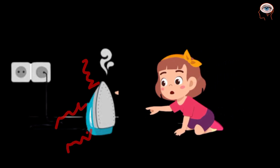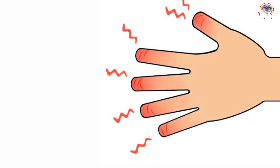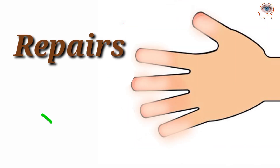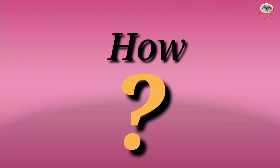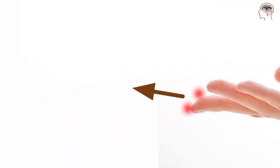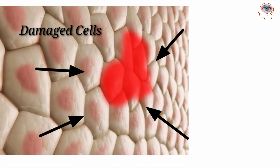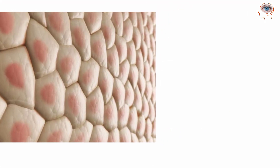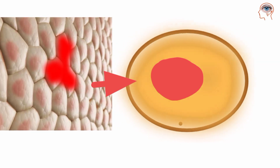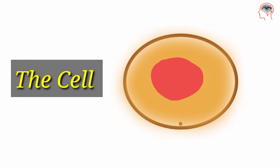When you touch some very hot object, your skin cells are burnt and after a few days, these burnt cells are repaired. To repair the damaged cells in your skin or anywhere in your body, the cells surrounding the damaged cell undergo a fascinating process. That process is called mitosis.